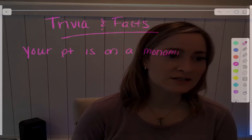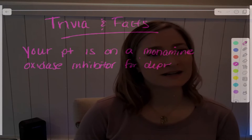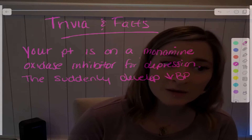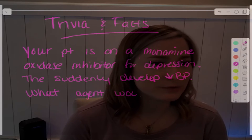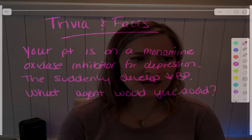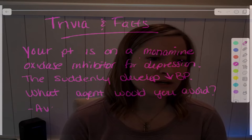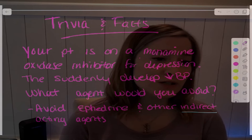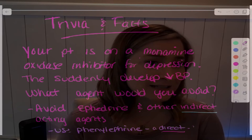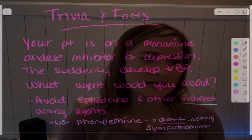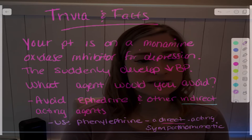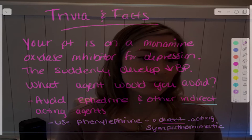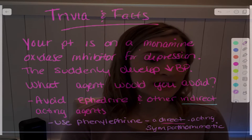Your patient is on a monoamine oxidase inhibitor for depression and suddenly develops hypotension. What agent might be appropriate for treating hypotension, and what agents should you avoid? You want to avoid ephedrine and any other indirect-acting agents. You actually want to use phenylephrine, which is a direct-acting sympathomimetic, to treat hypotension. Indirect-acting agents can actually cause significant hypertension, so you want to be careful with those.